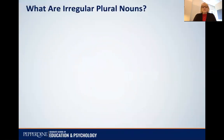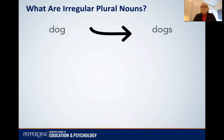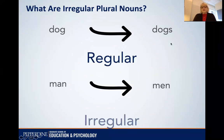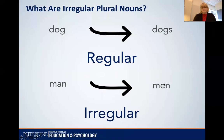So what do I mean by irregular plural nouns? Well, a regular plural noun ends in an S, as you can see here. These are regular, but irregular would be something like 'man' where the A changes to E — there's some sort of internal or other sort of change.